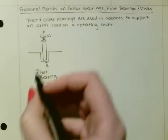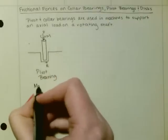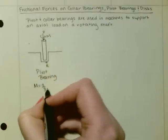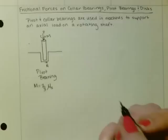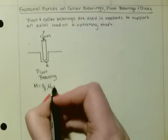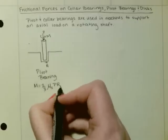And its equation is: the moment is equal to two-thirds times the coefficient of static friction times the axial load times the radius.